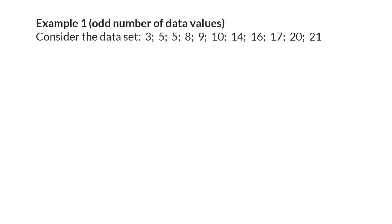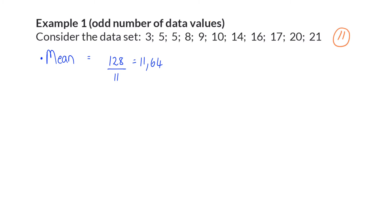Example 1 has an odd number of values in the data set — here we are given 11 values. To calculate the mean, we add up all 11 values and divide by 11. This means that if we wanted to make all 11 values the same size, each would be 11.64.